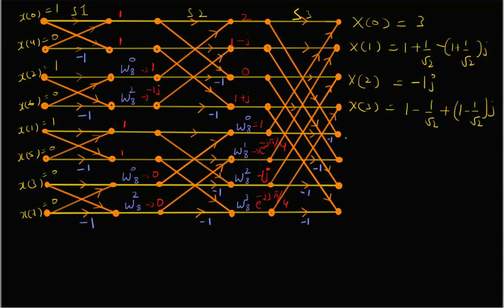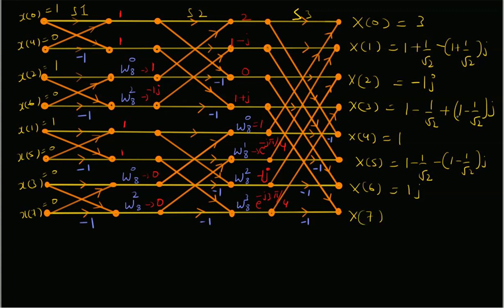X[4] = 2−1 = 1. X[5] = (1−j) − e^(−jπ/4) = (1 − 1/√2) − j(1 − 1/√2), which is the conjugate of X[3]. X[6] = 0 − (−j) = j, which is the conjugate of X[2]. X[7] is the conjugate of X[1] = (1 + 1/√2) + j(1 + 1/√2), since we are dealing with a real-valued signal.